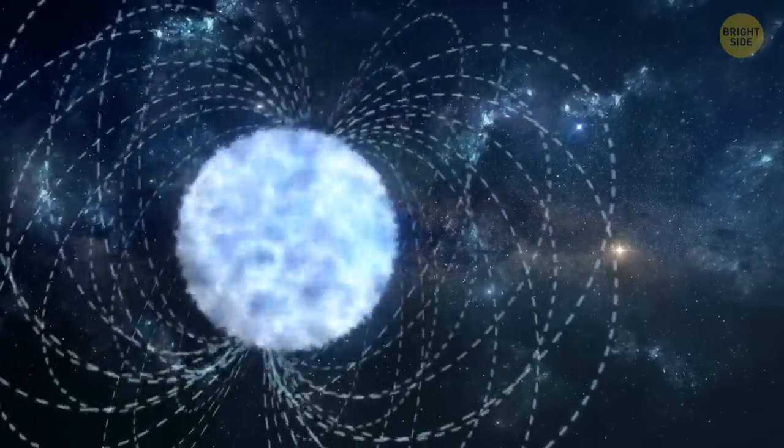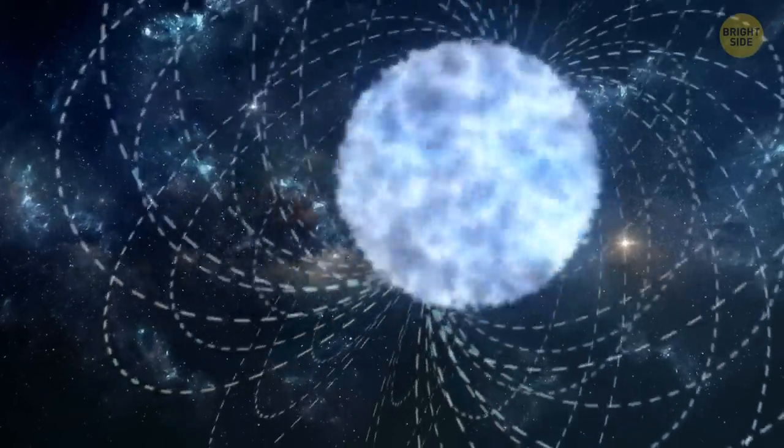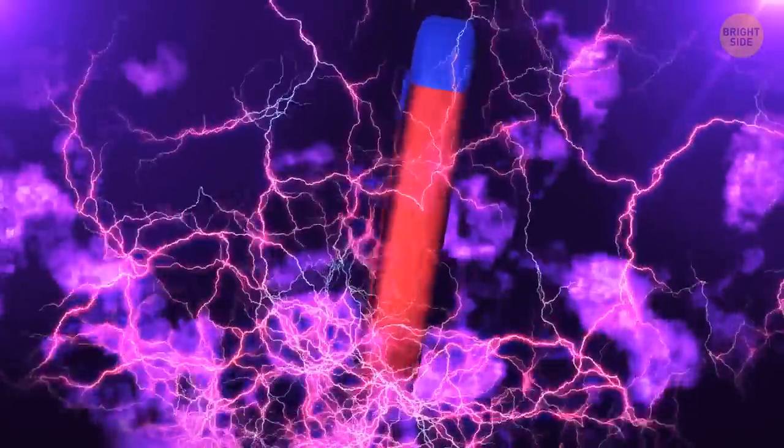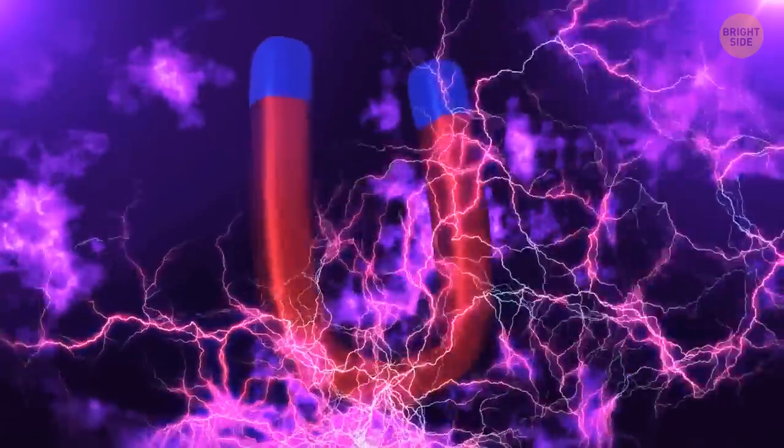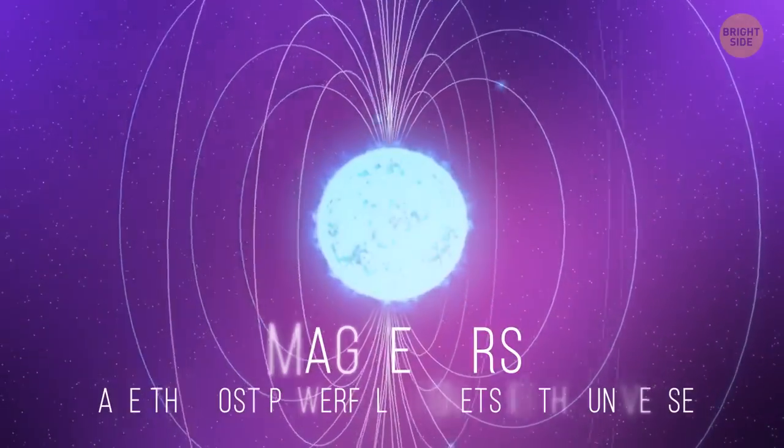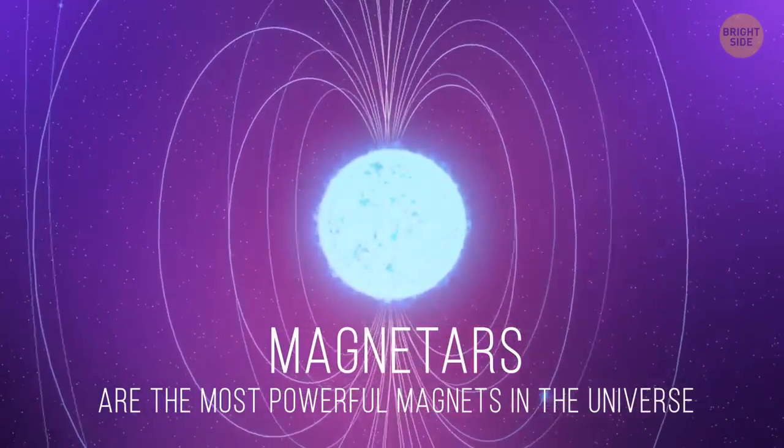But if neutron stars are bizarre and spooky, magnetars are too. Perhaps even more so. Thanks to their incredible magnetic pull, these stars would win in the strongest magnetic field competition, hands down. To put it simply, magnetars are the most powerful magnets in the universe.